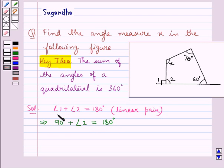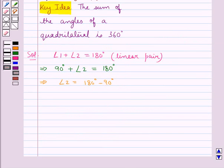Now transposing this 90 to the right hand side we have angle 2 is equal to 180 degrees minus 90 degrees. Now this implies angle 2 is equal to 90 degrees.